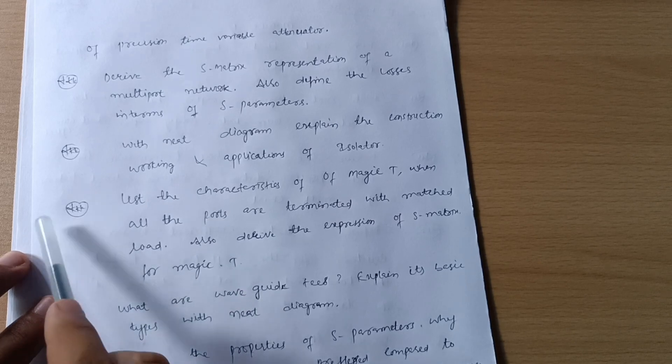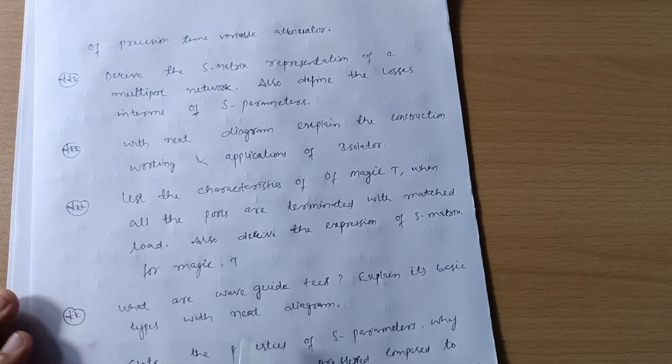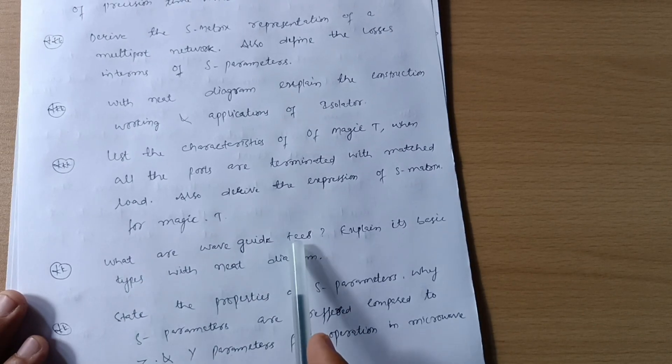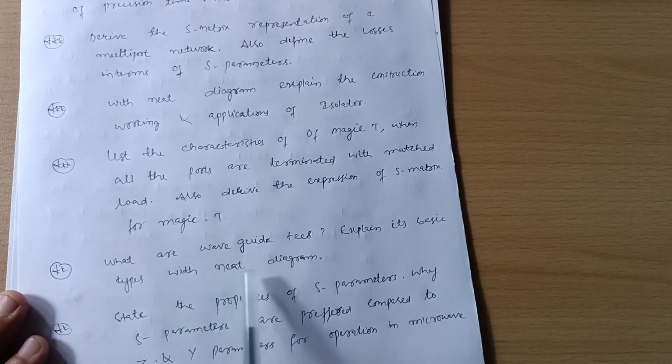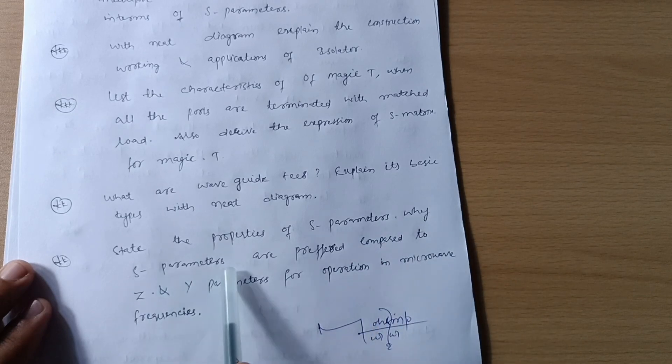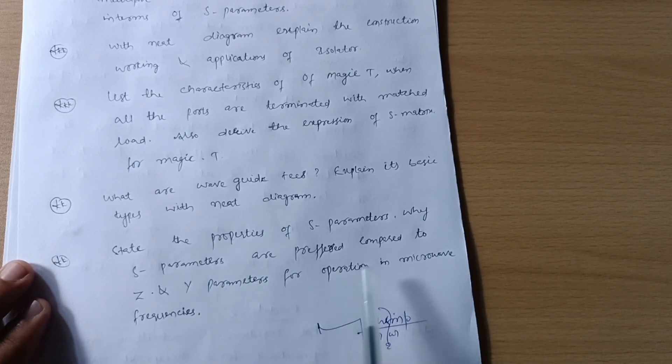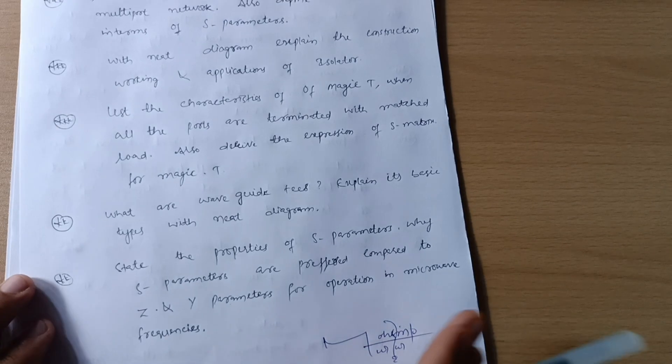Also derive the expression of S matrix for magic T. This is again a super important question. Most of the times VTU has asked this question. Next is what are waveguide Ts, explain basic types with neat diagram. State the properties of S parameters. Why S parameters are preferred compared to Z and Y parameters for operation in microwave frequencies. This is all about Model 2.